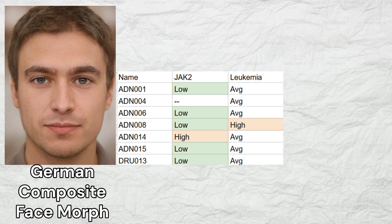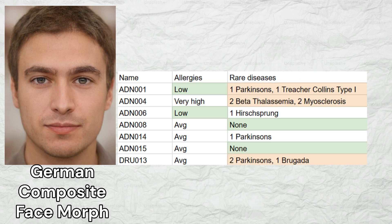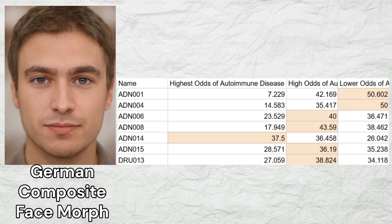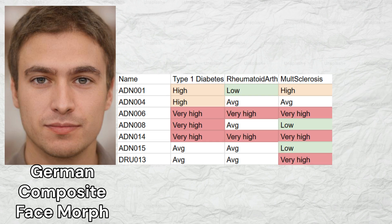Moving on to blood cancers, the early Germans had low rates of polycythemia vera based on JAK2 genotypes and average rates of leukemia. Two samples had low odds of allergies, and five out of seven samples carried risk variants for rare diseases, most common of which was Parkinson's disease, which three people carried risk variants for. The early Germans were also strongly predisposed to autoimmune disease based on HLA genotypes. Five samples had high odds of type 1 diabetes, two samples had high odds of rheumatoid arthritis, and four samples had high odds of multiple sclerosis, carrying HLA-DRB1 risk variants for MS.